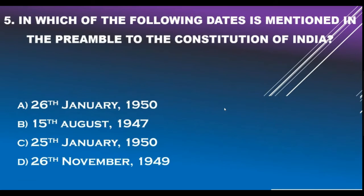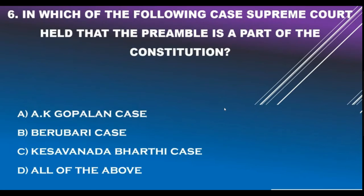Question number 5. Which of the following dates is mentioned in the Preamble to the Constitution of India? Option A - 26th January 1950. Option B - 15th August 1947. Option C - 25th January 1950. Option D - 26th November 1949. Correct answer is Option D: 26th November 1949.